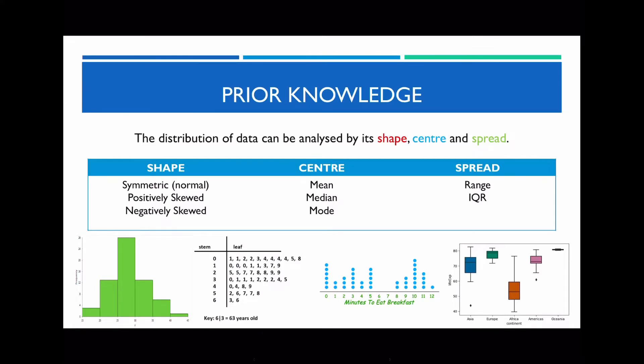Before we actually go into what standard deviation is, these are some of the things that we've already looked at in previous lessons. We said that the distribution of any data set can be analyzed by its shape, center, and spread. When we're talking about shape, we're talking about how does it actually appear — so is it symmetric or is it skewed? Is it positively skewed or negatively skewed? We can tell by looking at the lengths of the upper tail and lower tail.